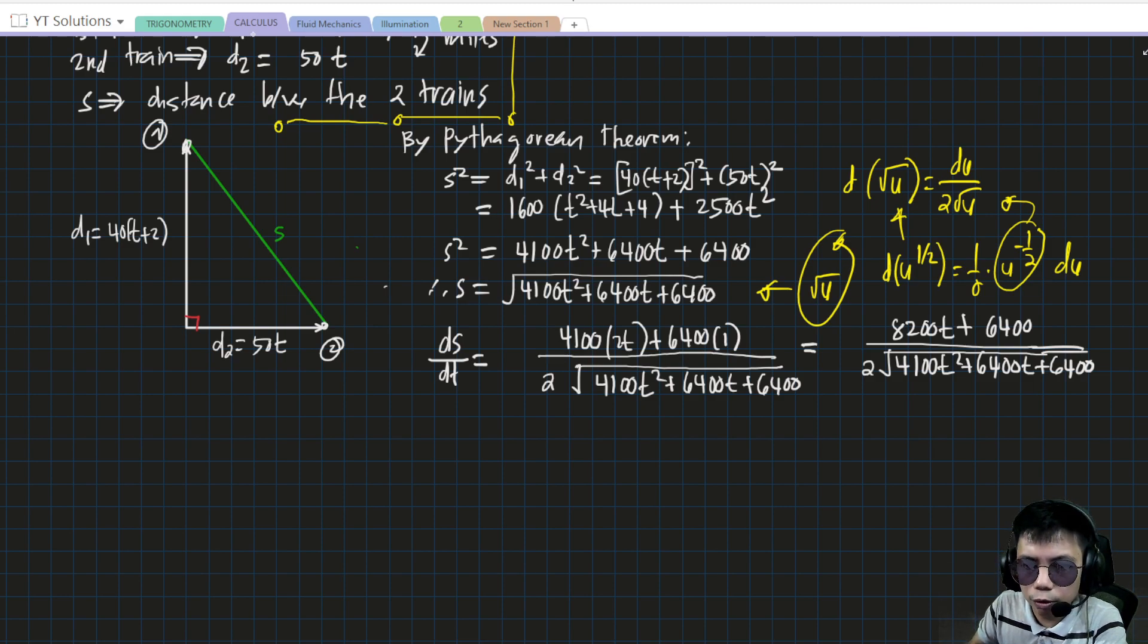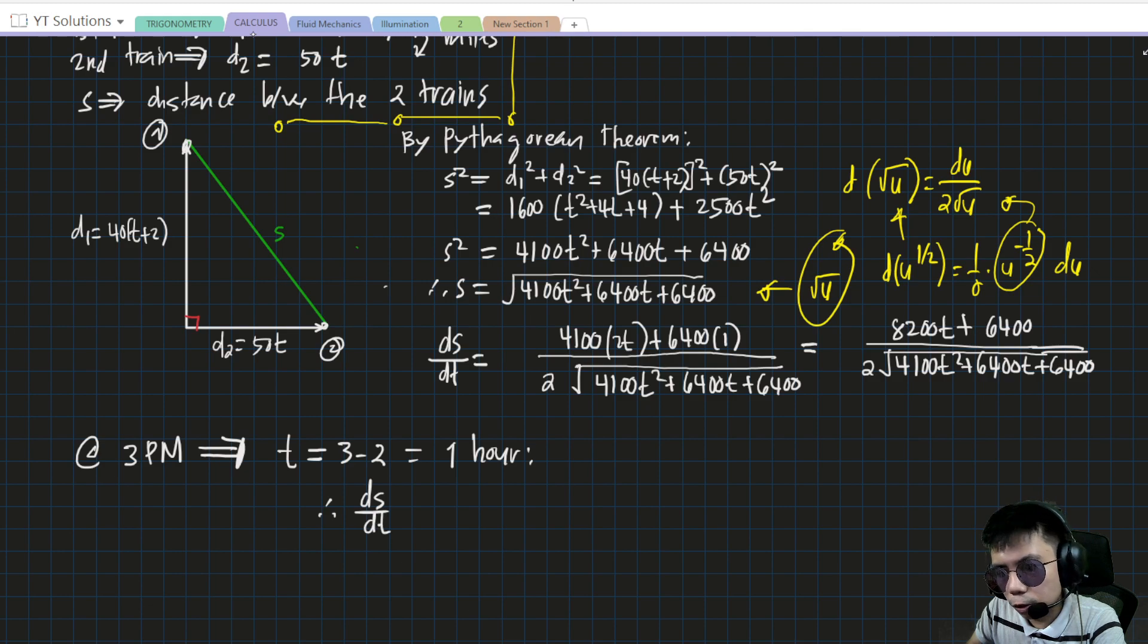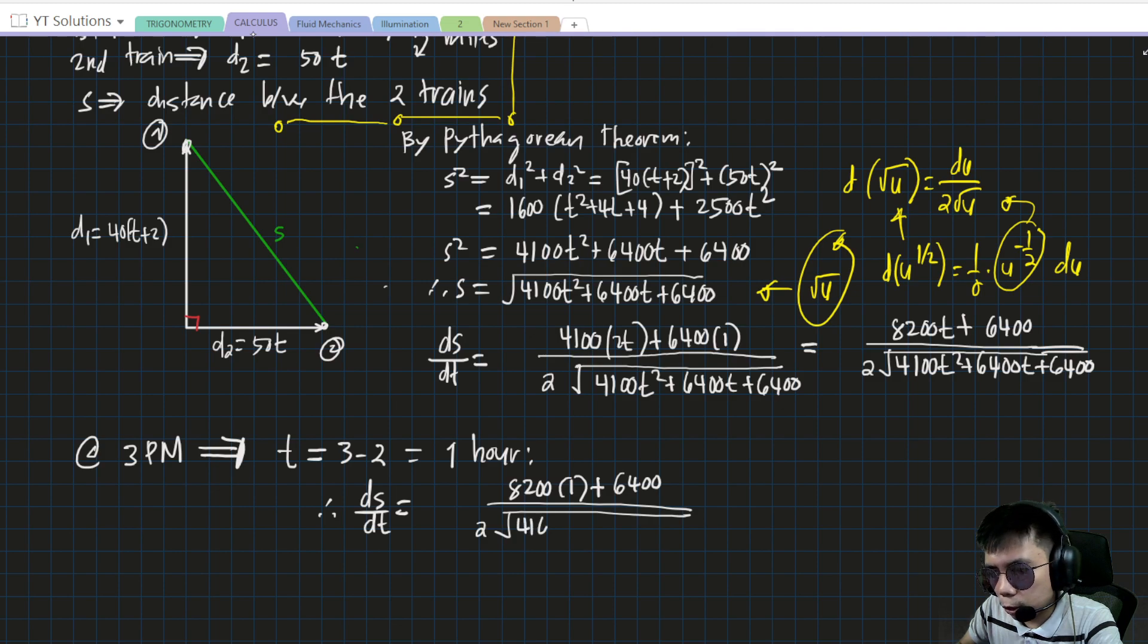The question asks for the rate of change at a time of 3 PM. At 3 PM, our reference is 2 PM, so the number of hours that elapsed since 2 PM is 3 minus 2, which is one hour. Therefore, when t = 1, our rate of change is [8200(1) + 6400] / [2√(4100(1)² + 6400(1) + 6400)].